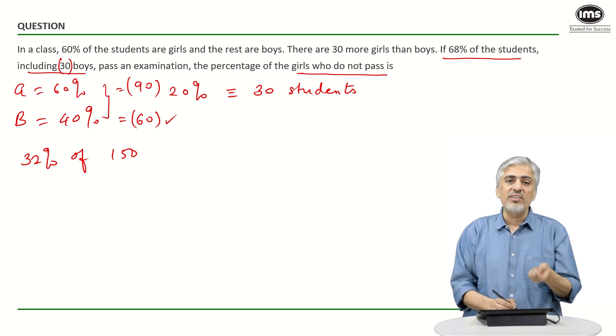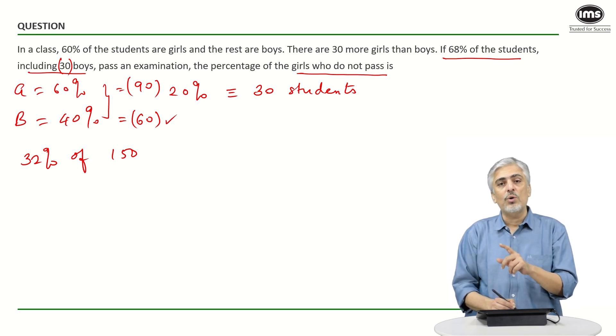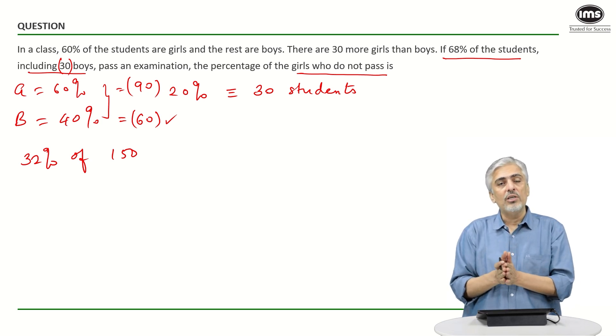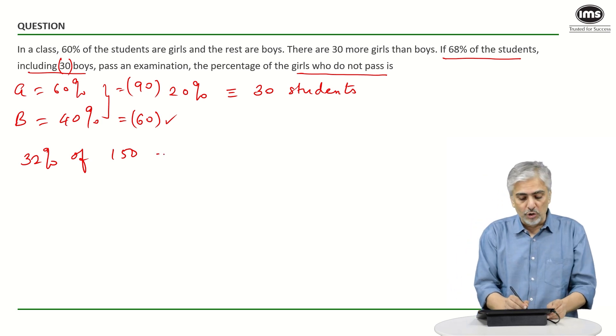32% of 150 is the same as 150% of 32. A percent of B is the same as B percent of A. How much is 150% of a number? The number and half of itself, which is 32 plus 16, equals 48.